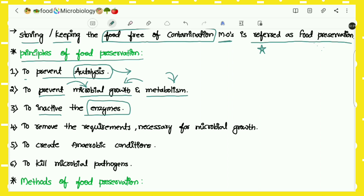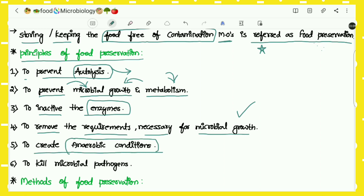The next principle is to remove the requirements necessary for microbial growth. Some food items contain favorable conditions for microbial growth, which leads to contamination and spoilage. So to prevent this, we have to remove those favorable conditions — the requirements necessary for microbial growth. Another principle is to create anaerobic conditions, which also helps prevent contamination.